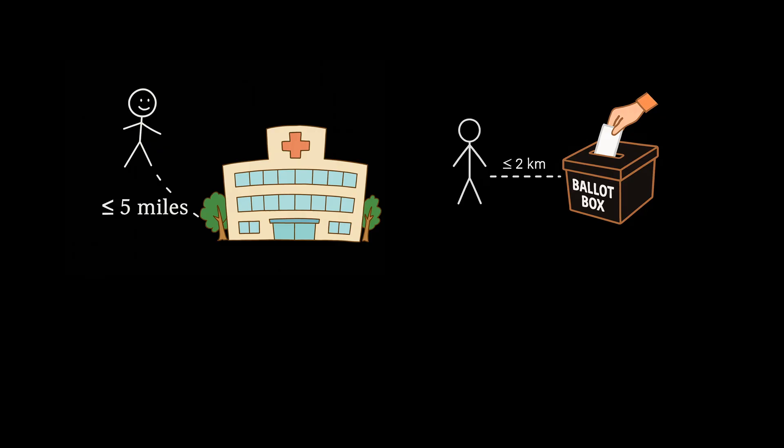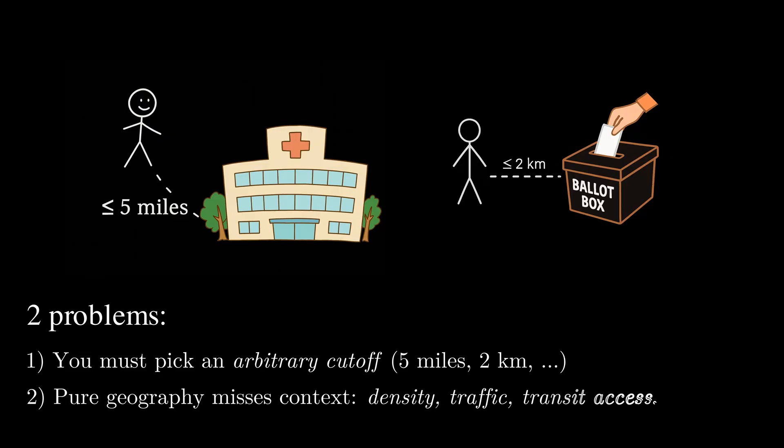First, it forces you to pick an arbitrary cut-off distance, like five miles or two kilometers or something else. Second, pure geography doesn't tell the whole story. Factors like population density, traffic, and access to public transportation matter just as much, if not more. This is exactly where TDA can help.